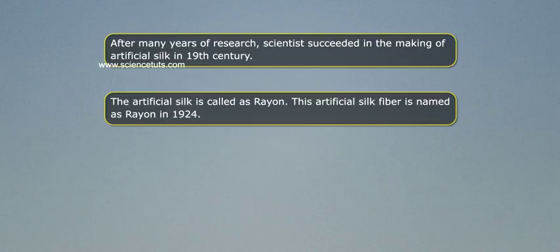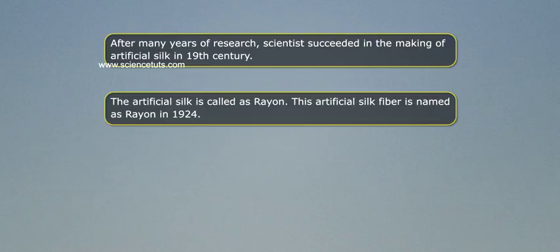The artificial silk is called rayon. This artificial silk fibre was named rayon in 1924. The first commercial production of rayon was achieved in the US in 1911. In India, the first rayon factory was established in Kerala in 1946.